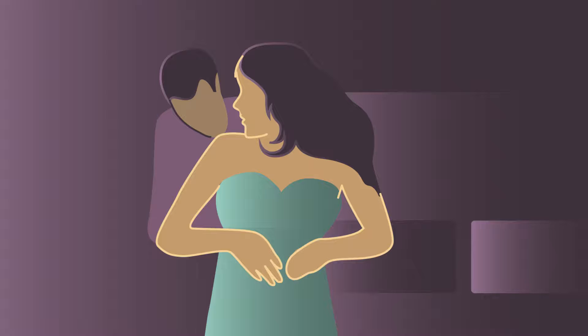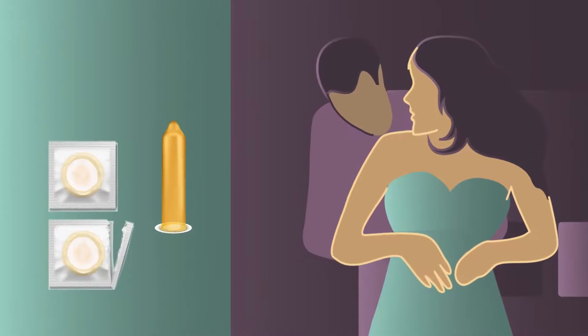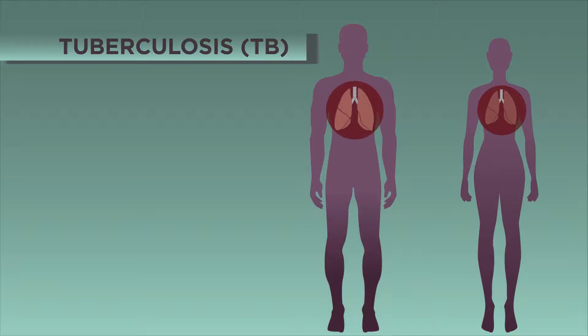The spread of gonorrhea is reduced by using a barrier method of contraception, such as condoms. Tuberculosis, or TB for short, is a bacterial infection that mainly affects the lungs.